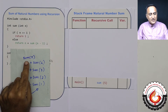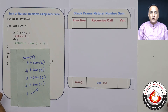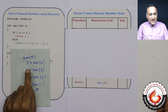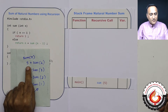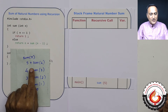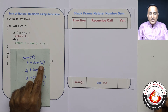Let us say I have to find the sum of numbers between 1 to 5, which is going to be 1 plus 2 plus 3 plus 4 plus 5. Now if I want to find the sum of numbers from 1 to 5, I can say 5 plus the sum of all the numbers from 1 to 4, but I do not know what is the sum of numbers from 1 to 4.